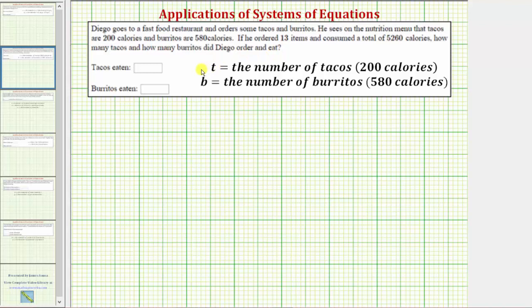We first define the variables to represent the unknowns, so let's let t equal the number of tacos. Each taco has 200 calories and let's let b equal the number of burritos, each burrito has 580 calories.